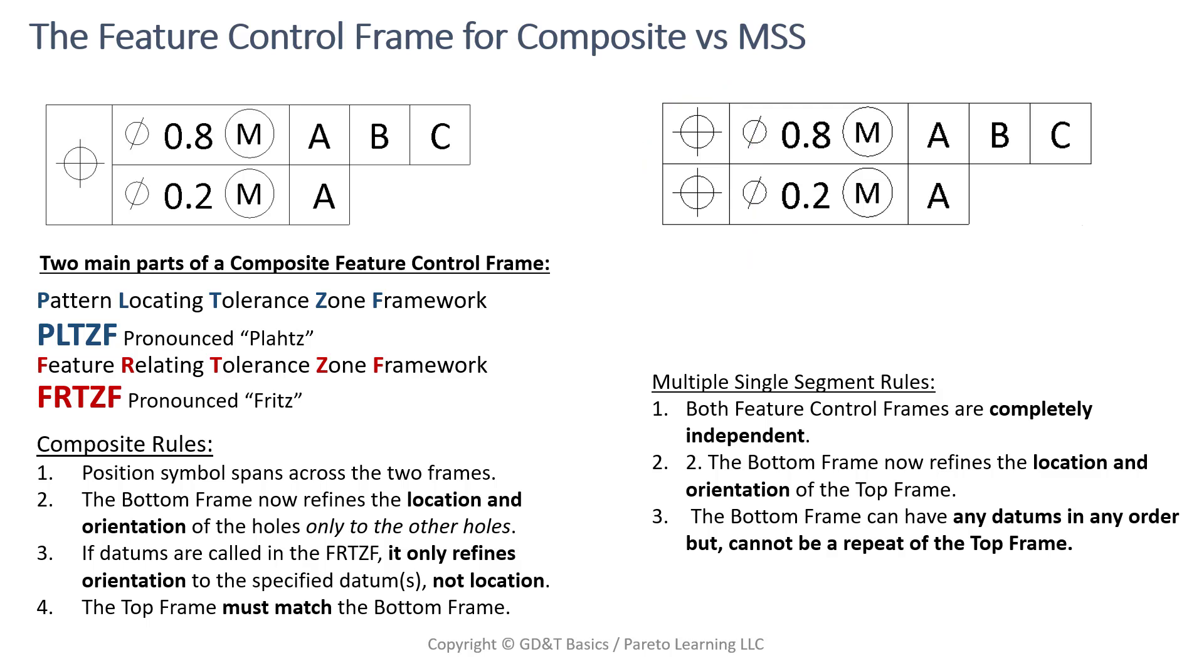Back over here on the left with composite, we do have the top frame and the bottom frame. For composite position, they have their own names. The top one is the PLTZF, and it is pronounced Platts. The bottom one is the FRTZF. So the top one being the PLTZF, it's the Pattern Locating Tolerance Zone Framework. The bottom one, the FRTZF, is the Feature Relating Tolerance Zone Framework. All that simply means is that the top one, or the PLTZF, is taking the pattern and locating the pattern to the datum reference frame, basically to the part.